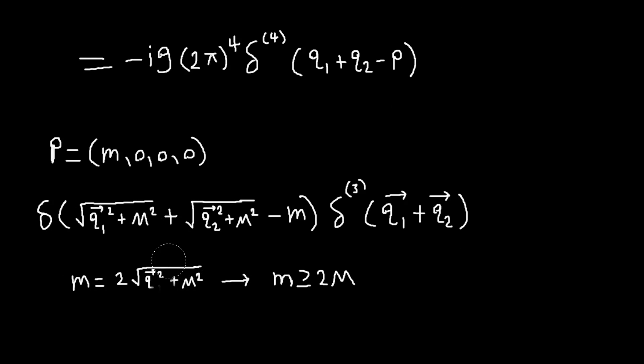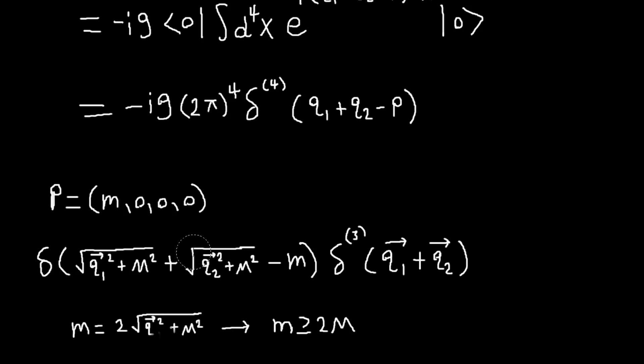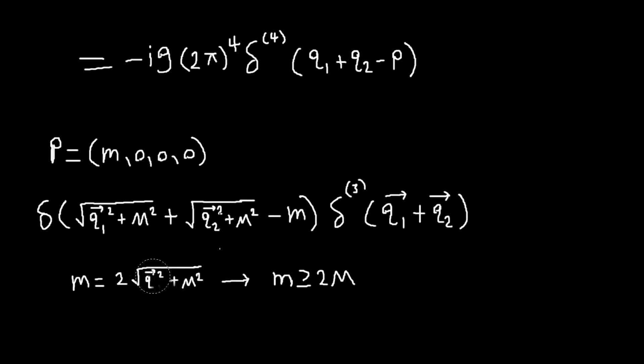And then if the B and C particles are also at rest, so q is 0, then M will just be 2 big M. And so, in order for this interaction to occur at all, M has to be at least bigger than 2 M.